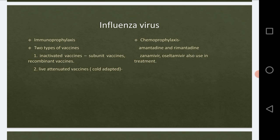Next, in chemoprophylaxis, the drugs we can use to treat this virus include amantadine and rimantadine, which are very useful in the treatment of influenza. They maximally reduce the average duration of the disease, resulting in improvement. Newer drugs that have been designed are zanamivir and oseltamivir, which block viral neuraminidase.